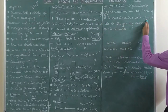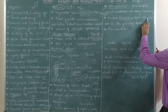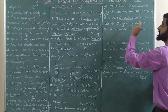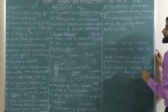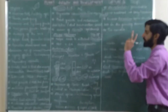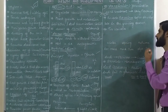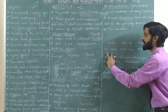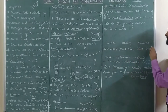Vernalization prevents precocious reproductive development — that is, it prevents reproductive development from happening before its time, late in the growing season.